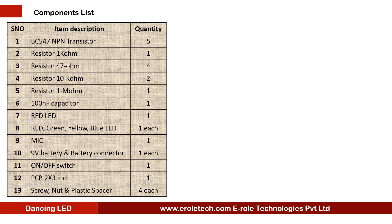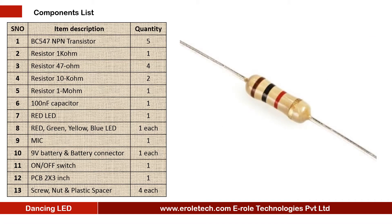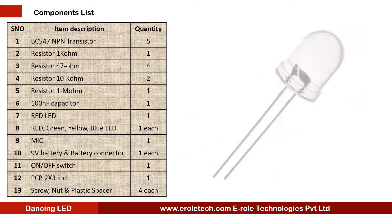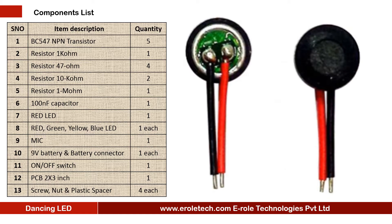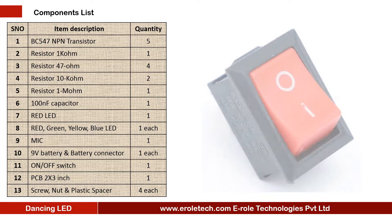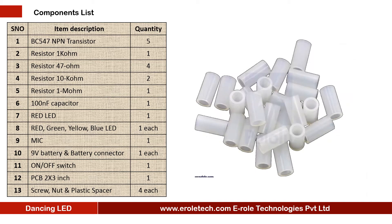These are the components needed for this project: 5 NPN transistors BC547, 1 kilo ohm resistor, 4 47-ohm resistors, 2 10-kilo ohm resistors, 1 mega ohm resistor, 1 100 nanofarad capacitor, 2 red LEDs, 1 green LED, 1 yellow LED, 1 blue LED, 1 mic, 1 9-volt PP3 battery, 1 on-off rocker switch, 1 zero PCB, 4 screws with nuts, and 4 plastic spacers.